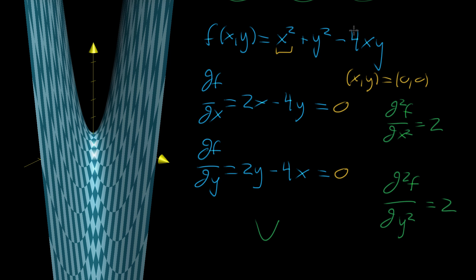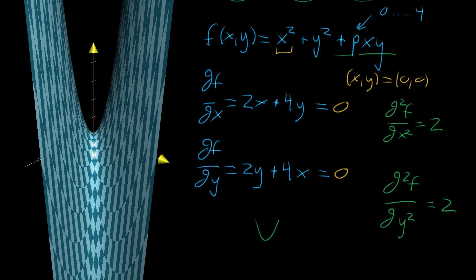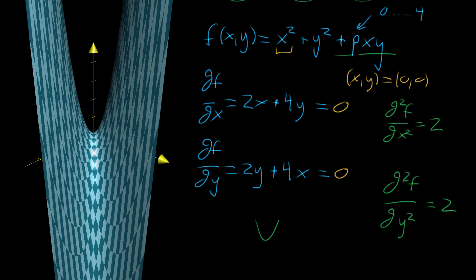So the two pure second partial derivatives aren't enough — we need more information. What it comes down to is this plus four xy term, which evidently influences whether this is a local minimum or a maximum. To give a loose intuition, let me write p for the coefficient in front of xy, where p ranges from zero up to four. When p is pulled back to zero, you get something that reflects what you'd expect: positive smiley face in both x and y directions, a local minimum.